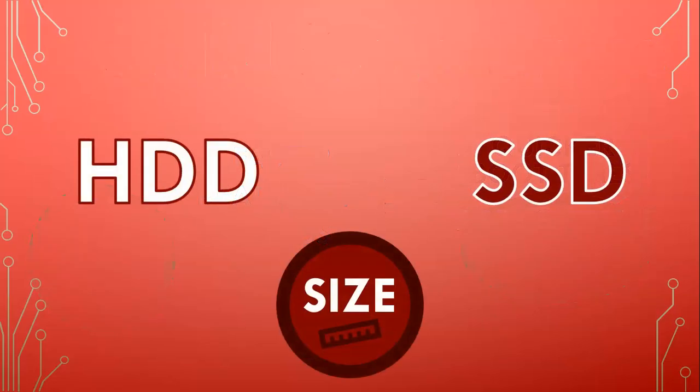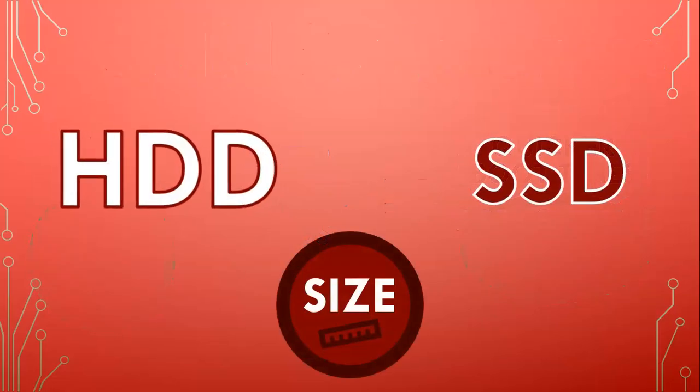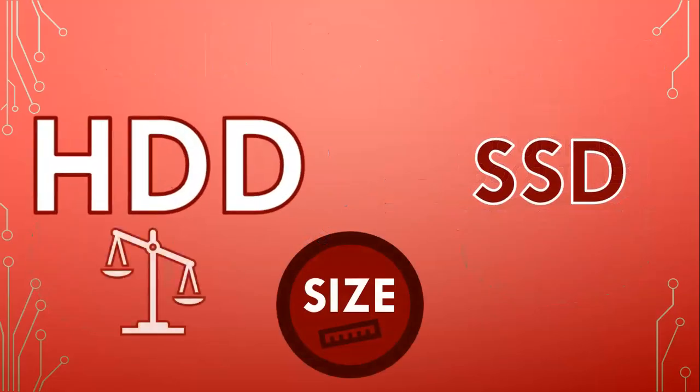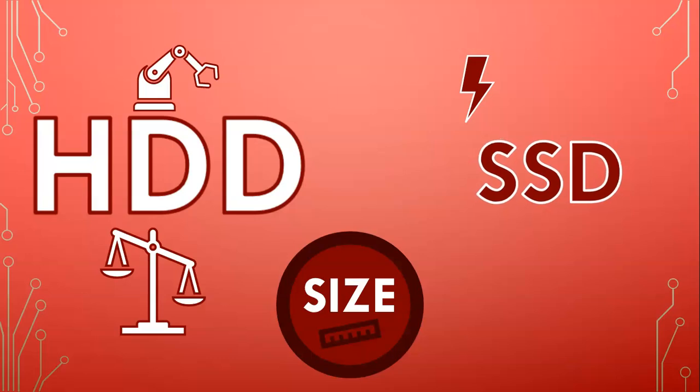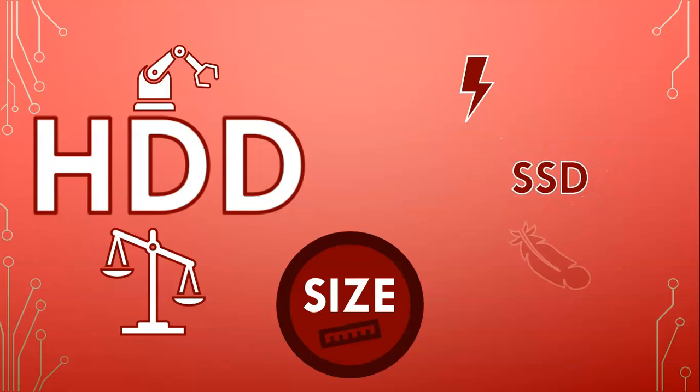When it comes to the physical size of the hardware device, hard drives are larger and heavier and have moving parts. Because SSDs have electronic circuits, it's much easier to compact all those non-moving parts into a smaller and lighter piece of hardware.